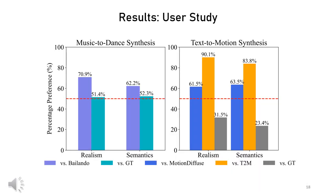In contrast, our motions are diverse and realistic, as confirmed by the user study we conducted, in which participants were shown two motions at a time and asked to select the more realistic and semantically more accurate one. Remarkably, the users preferred our method in roughly 50% of the cases compared to the ground truth.